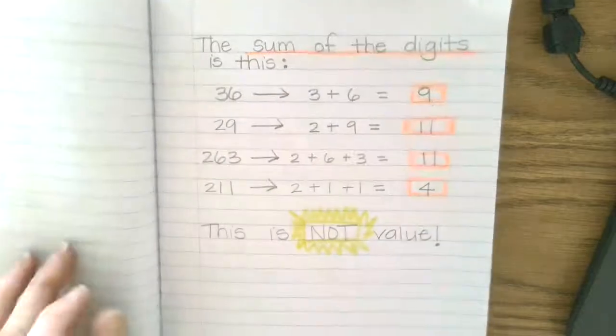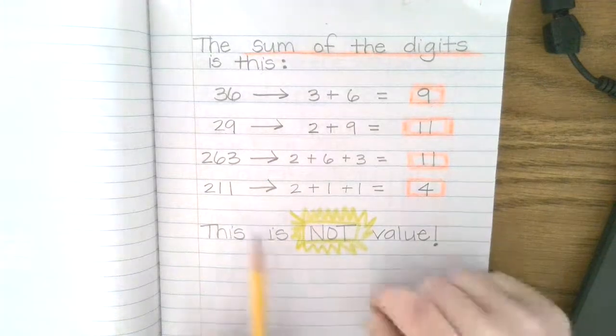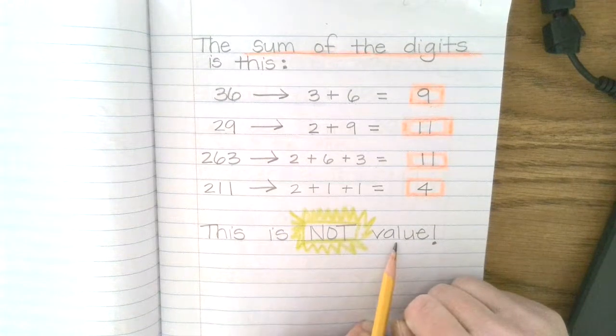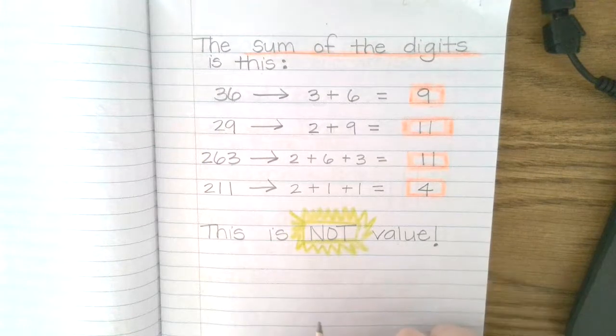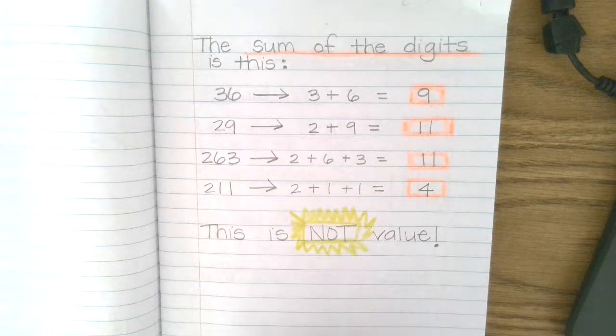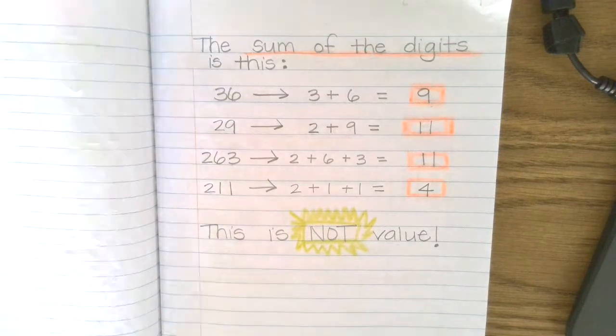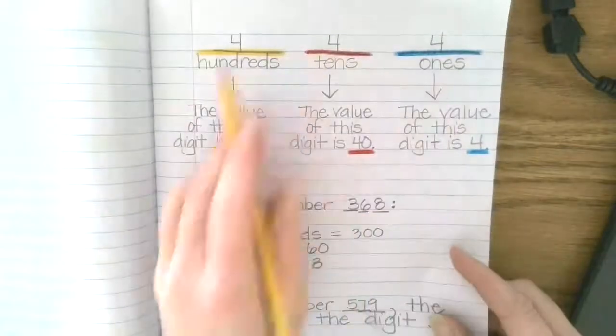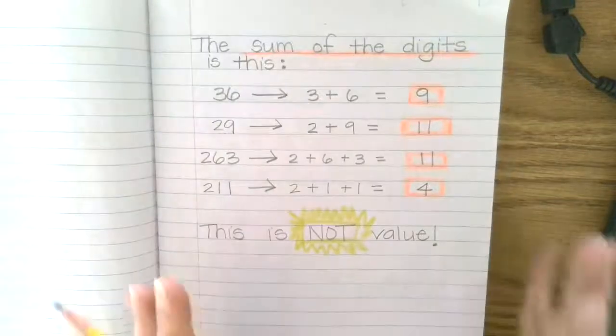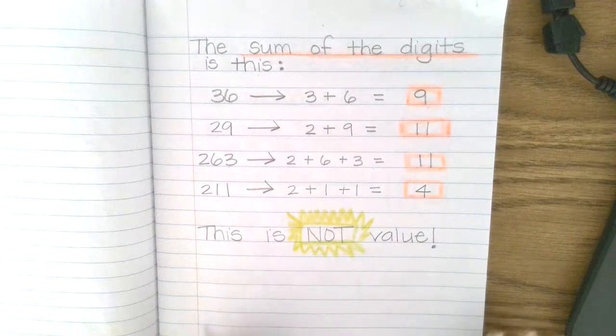I'm going to give you time to copy this down in your math journal, but this is the most important part. This is not value. We are not talking about the value of the numbers. We are just talking about the digits. That's really important that you don't get confused. This is not value. The page before was value. We talked about the values of each number. This is not value.